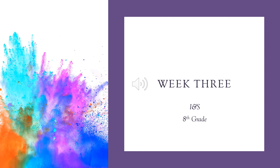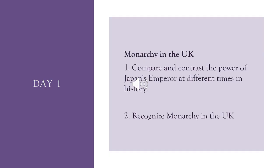Now, let me tell you exactly what we are going to do in each of our classes. On day 1, we are going to dig deep into the monarchy in the UK. But before that, we are going to compare and contrast the power of Japan's emperor at different times in history. We are going to watch a video about that, and we are going to work on your book on page 9 to compare and contrast between the power of the emperor in 1889 and 1947. We are going to use a Venn diagram to make that comparison.